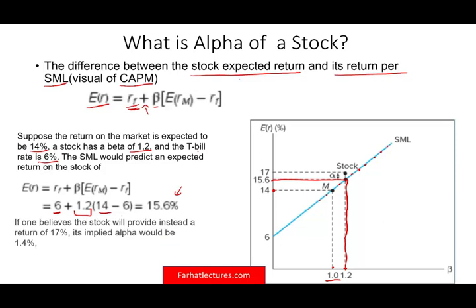Now, let's assume if one believes that the stock will provide instead a 17% return, not 15.6%. Well, if at beta 1.2, we're going to earn, let me change the color here, if we're going to earn at beta 1.2, if we believe it's going to be 17%, it means we have a positive alpha of 1.4%, which is the difference between 17 and 15.6.